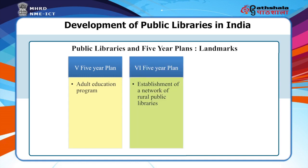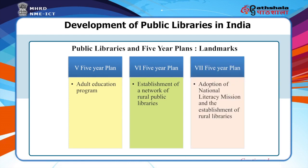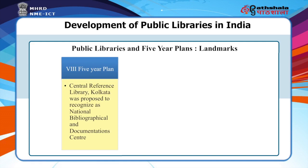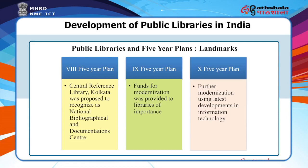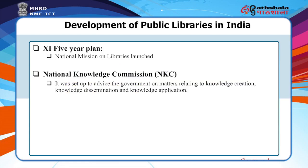In the sixth plan period, emphasis was on establishing a network of rural public libraries. The seventh plan adopted the national literacy mission and the establishment of rural libraries. The eighth plan proposed the Central Reference Library Kolkata to be recognized as a national bibliographic and documentation center. During the ninth five-year plan, funds for modernization were provided to libraries of importance. The tenth plan undertook further modernization using latest developments in information technology. In the eleventh plan, the national mission on libraries was launched.